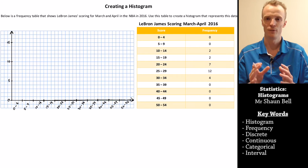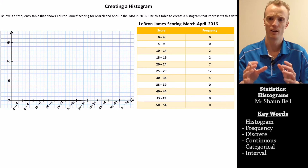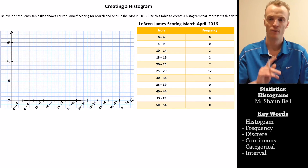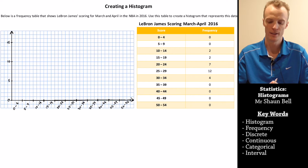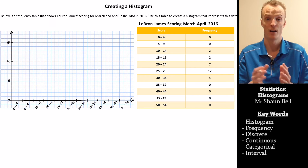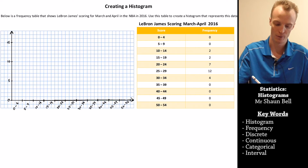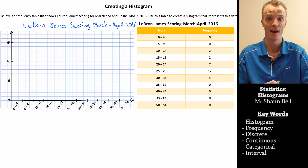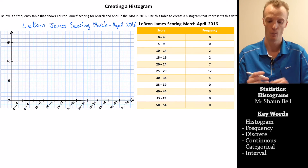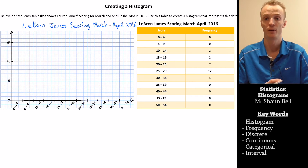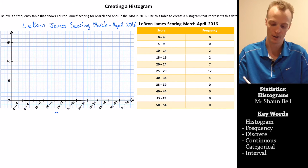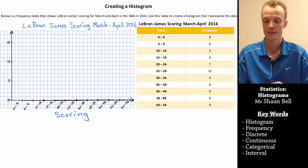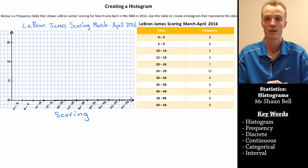Before we begin creating the histogram, there are a few things we need to ensure we include with every histogram. The very first thing is we need a title — in this case, LeBron James' scoring between March and April 2016. The next thing is labels for both the x-axis and the y-axis. Along the x-axis, I've represented the intervals of scoring from my frequency table, so I'll call that 'scoring.' Along the y-axis, I've got the frequency, so I'll call that 'frequency.'